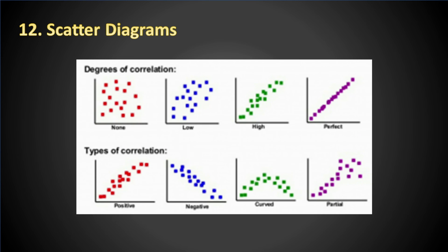A scatter diagram can demonstrate a relationship between any element of a process, environment, or activity on one axis and a quality defect on the other axis. Use the scatter diagram as a standalone tool or in conjunction with other quality tools to ensure decisions are data-driven.